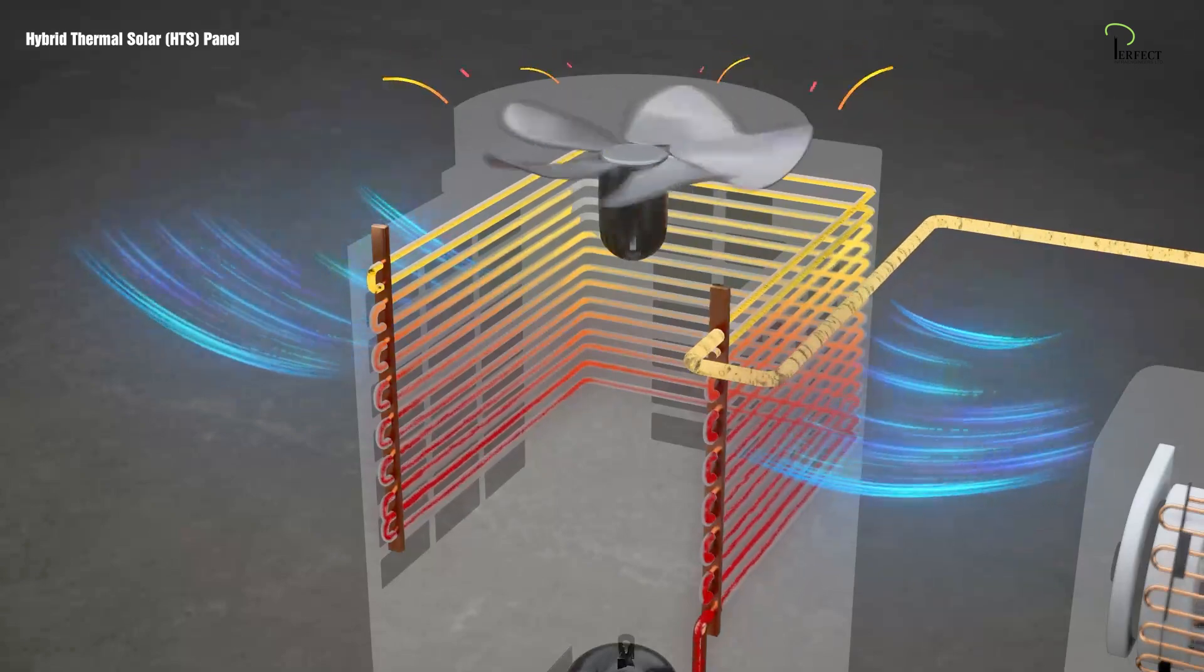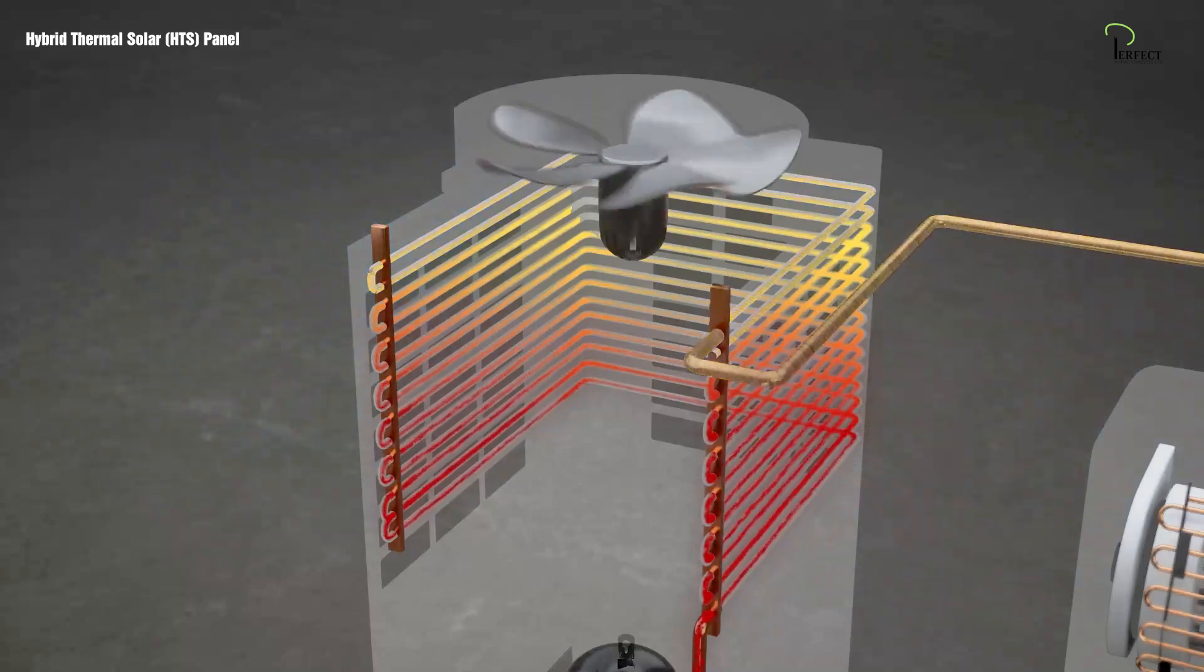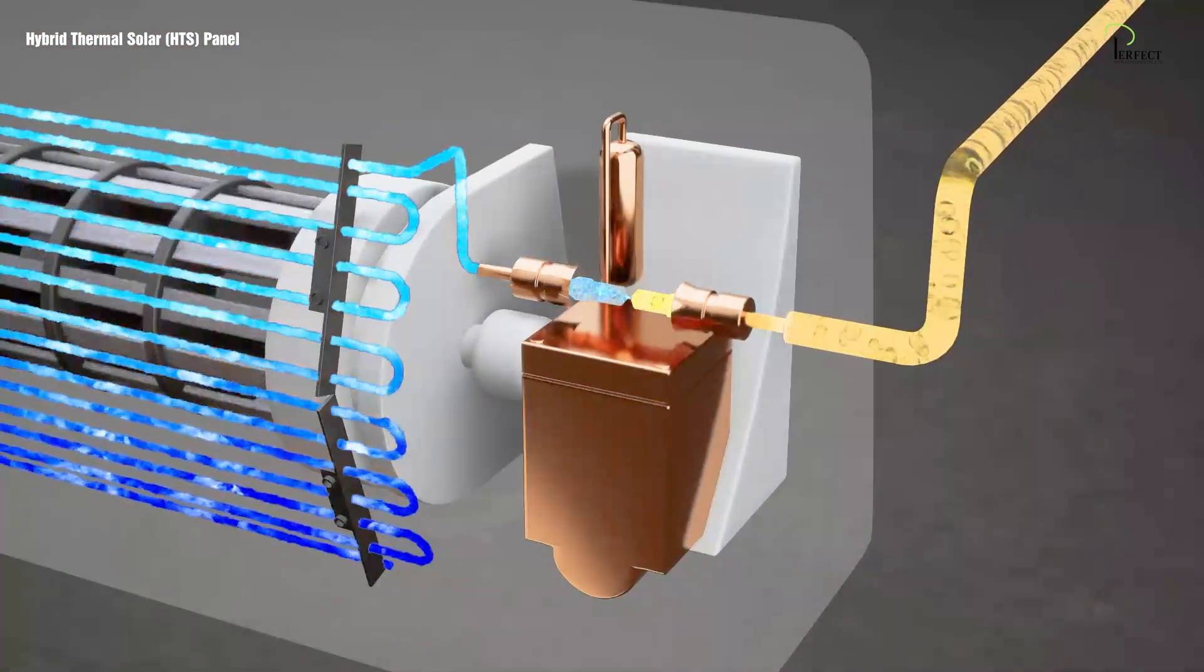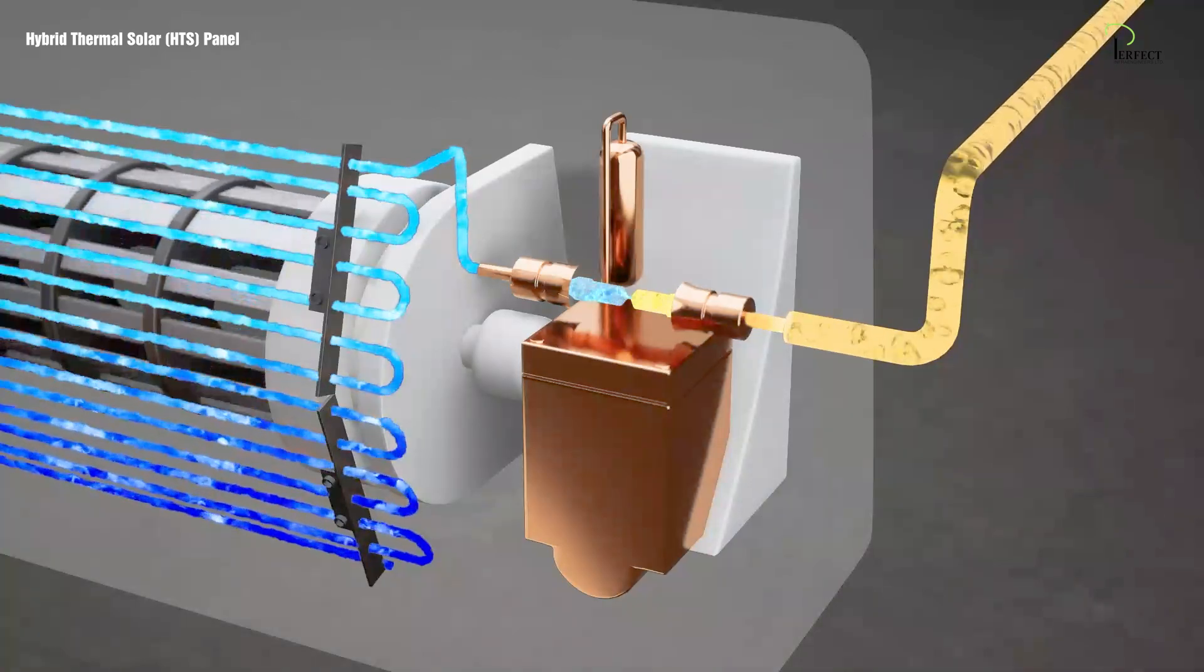Unless the temperature of the compressed gas is higher than that of the outside air, the heat will not be ejected from the AC system and the gas will not cool down in the condenser. Only once it is cooled down to a liquid and then cooled further as it passes through the expansion valve.